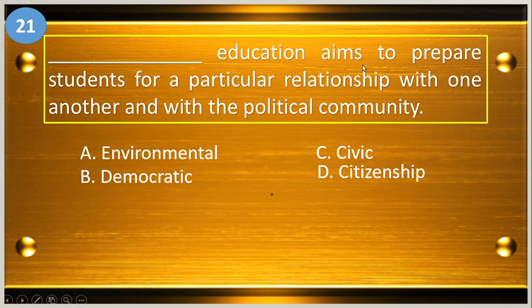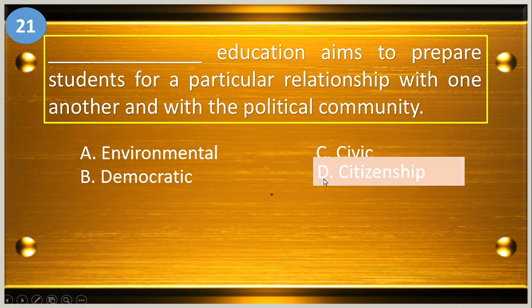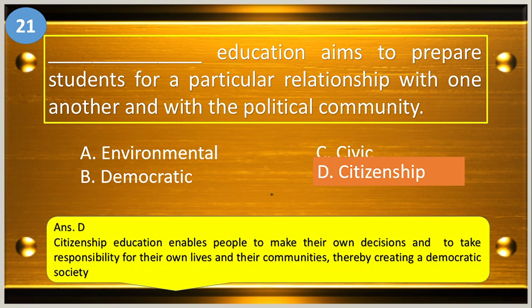Number twenty-one: blank education aims to prepare students for a particular relationship with one another and with the political community. A, environmental; B, democratic; C, civic; and D, citizenship. The answer is letter D, citizenship.